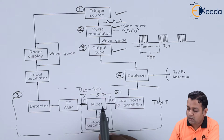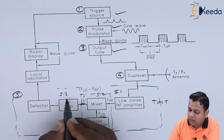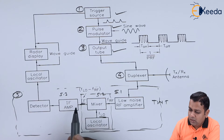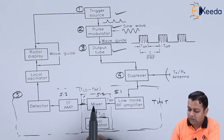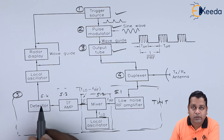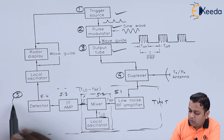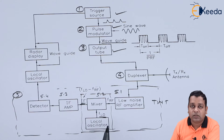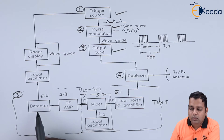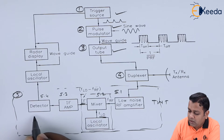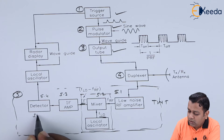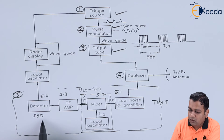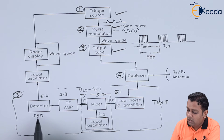After the mixer block we have the IF amplifier, which is block 5.3. In the IF amplifier there is amplification of this intermediate frequency made possible with the help of the mixer operation. Finally it is given as input to the detector, block number 5.4. In the detector block, a Schottky barrier diode (SBD) is used. The work of the Schottky barrier diode is to extract the pulse modulation from the IF amplifier output.